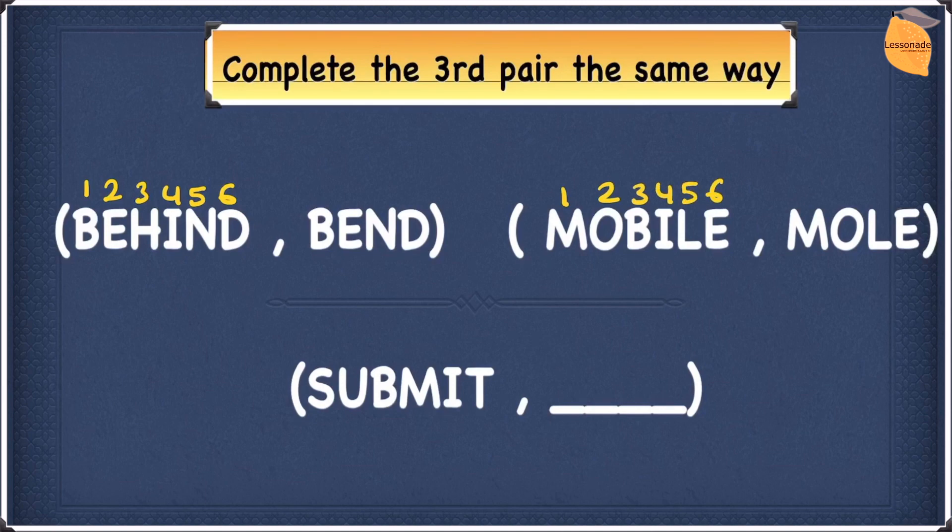Now, if we look at BEND, the first letter of BEND is B. B is in the first position for BEHIND, and we are going to write 1 over B. Now, let's go into the second letter, which is E. E is in the second position for BEHIND, and we are going to write 2 above the E.